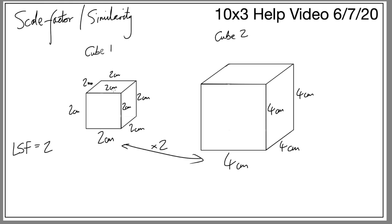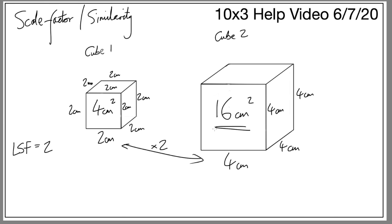Let's see what happens when we apply the same to the face area. The area of one face of cube one is 2 times 2 equals 4 centimeters squared. If the length scale factor is 2, you might guess the area is 8 — but let's check. Cube two has face dimensions 4 by 4, so that square is 16 centimeters squared. Four times two is eight, not sixteen, so the area scale factor, ASF, is actually four — we multiplied 4 by 4.